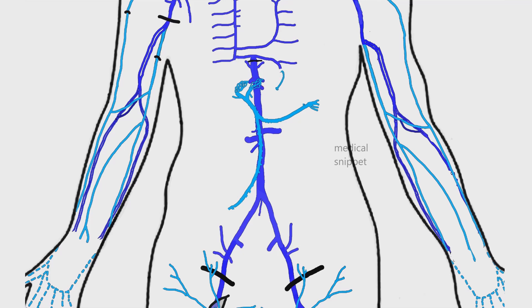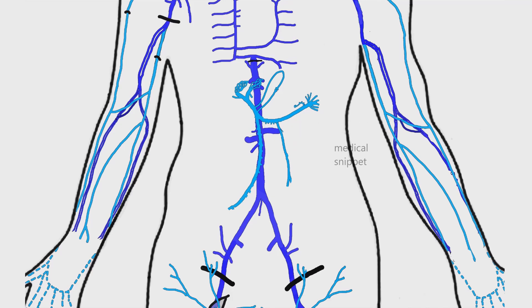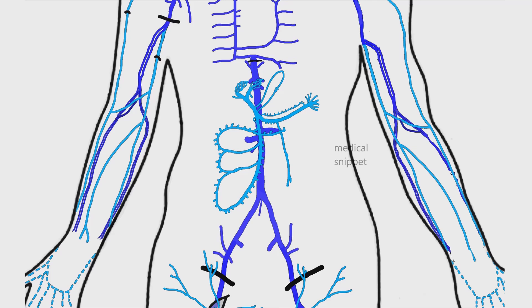The trunk of the portal vein receives the left and right gastric veins. The inferior mesenteric vein drains into the splenic vein. The other tributaries of the splenic vein are short gastric veins, pancreatic veins, and the left gastroepiploic vein. The tributaries of the superior mesenteric vein are right gastroepiploic vein, middle colic vein, right colic vein, and ileocolic vein. The ileal and jejunal veins also drain into the superior mesenteric vein. The tributaries of the inferior mesenteric vein are left colic vein, sigmoidal vein, and superior rectal vein.